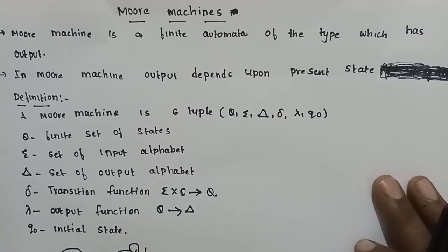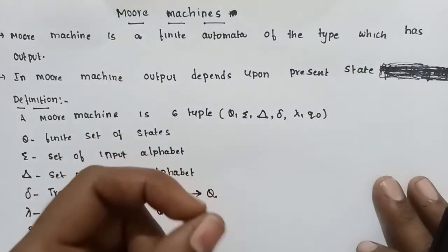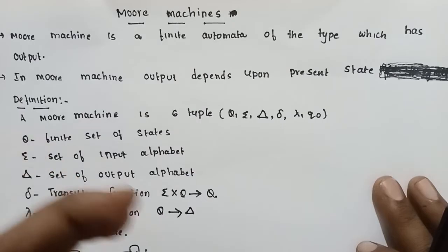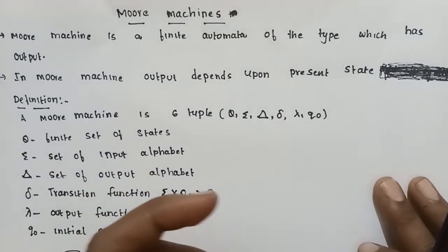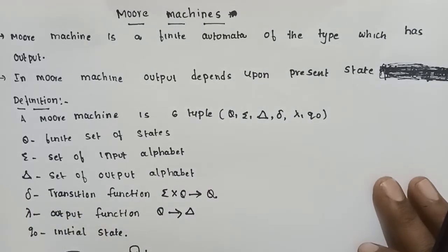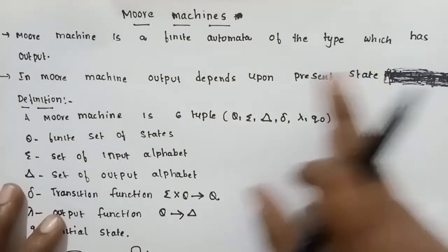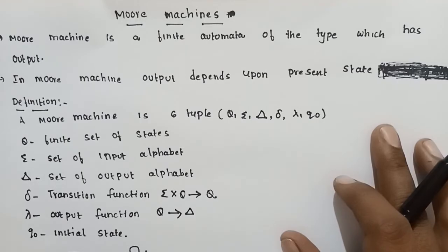This is a finite automaton with output. If you want to comment on this topic, please subscribe to the channel. This is a finite automaton with output. This output depends on the Moore machine.